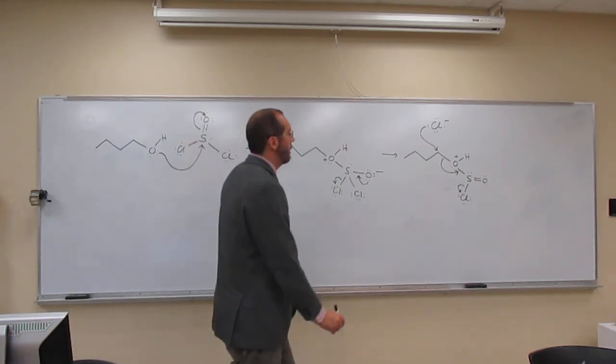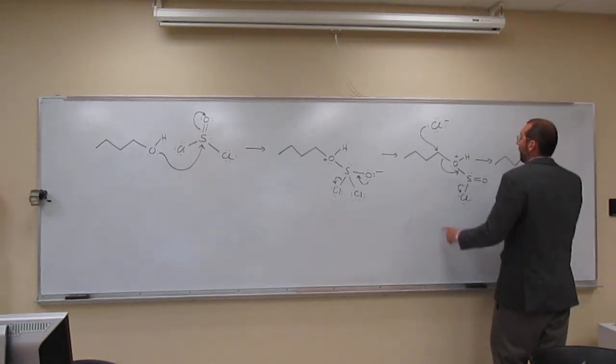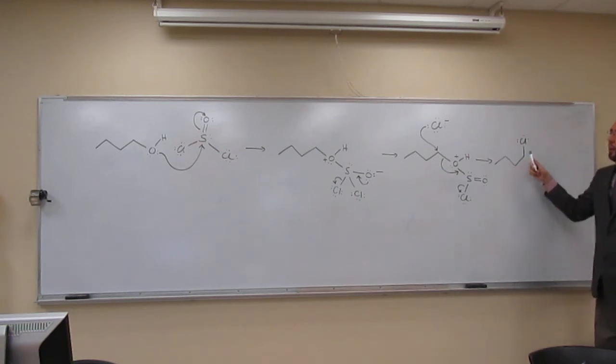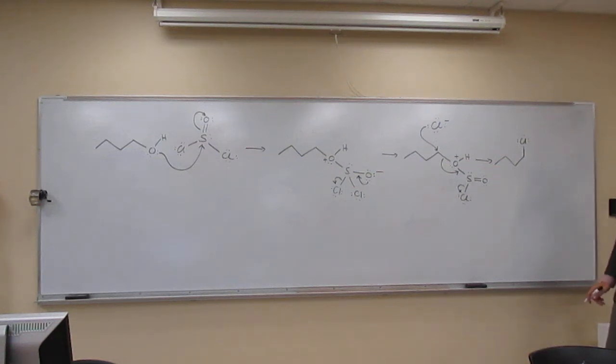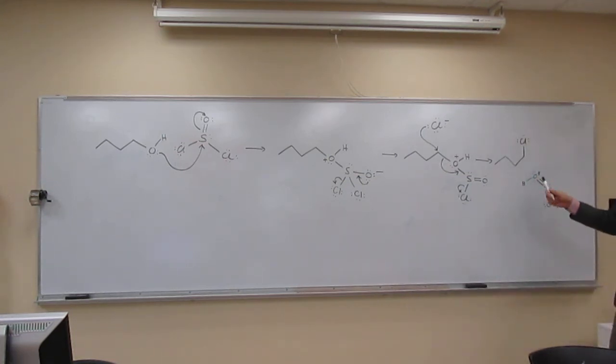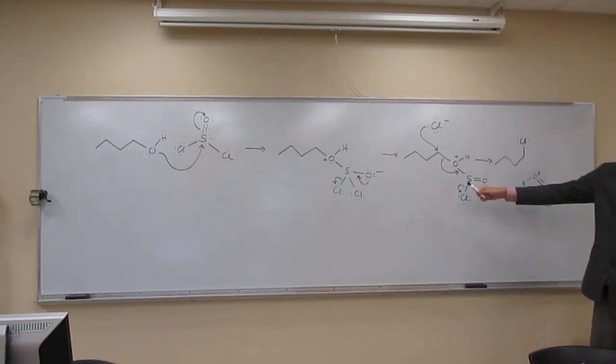Now the important part of our reaction is done. We've made the alkyl chloride like what we were looking for. And I'm going to draw it like that just to emphasize that it came from the other side. We've also made protonated sulfur dioxide. And then the Cl minus as well.